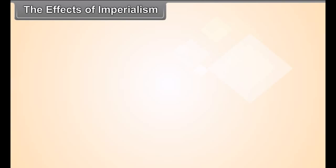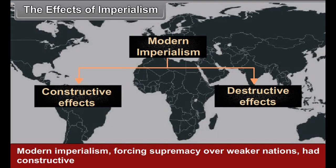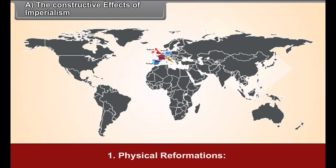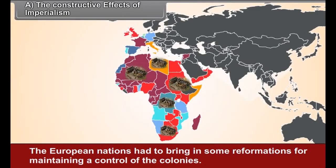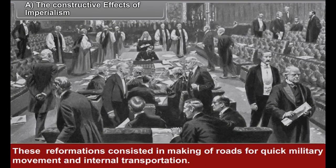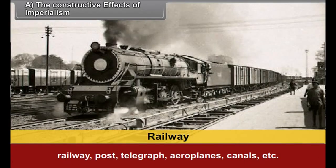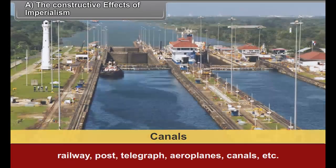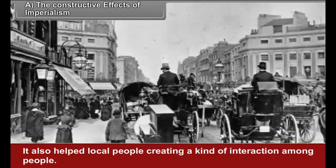The effects of imperialism: Modern imperialism, forcing supremacy over weaker nations, had constructive and destructive effects in modern times. First, physical reformations. The European nations had to bring in some reformations for maintaining control of the colonies. These reformations consisted in making of roads for quick military movement and internal transportation, railway, post, telegraph, aeroplanes, canals, etc. As the colonizers stood to gain these facilities, it also helped local people, creating a kind of interaction among people.